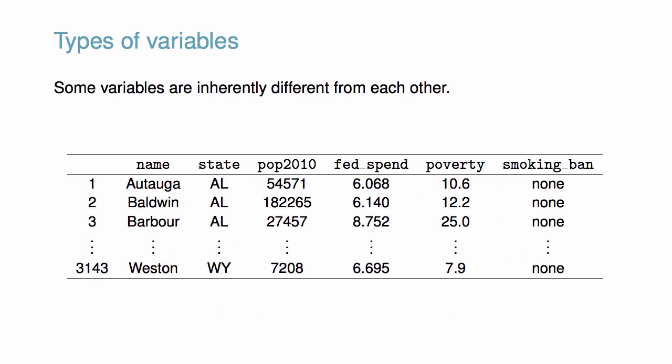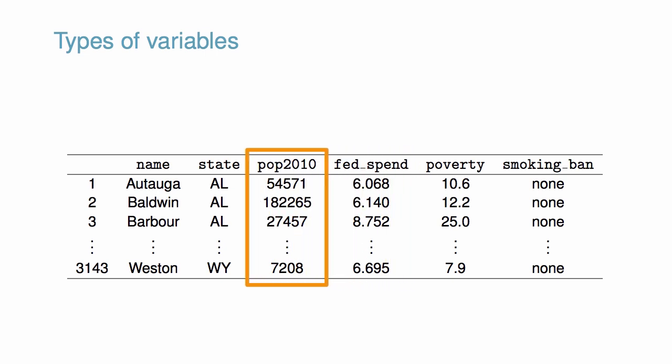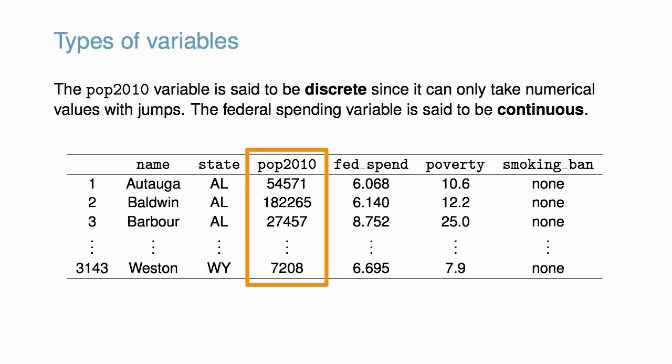Thinking about the variables in our county dataset, we can see some variables are inherently different from each other. The variable FedSpend, Federal Spending Per Capita, is said to be a numerical variable since it can take a wide range of numerical values, and it is sensible to add, subtract, or take averages with those values. The POP2010 variable, population in 2010, is also numerical. POP2010 can only take whole, non-negative numbers such as 0, 1, 2, and so on. For this reason, the population variable is said to be discrete, since it can only take numerical values with jumps.